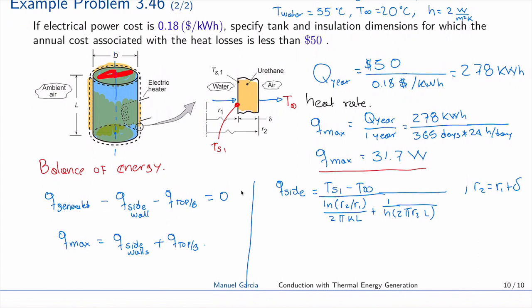Now we add Q of the top and bottom. Those are actually plane walls because they are flat surfaces. Q of the top equals the same difference of temperature, T_S1 minus T_infinity. The first resistance is the resistance of a wall because it's flat, and the thickness of the wall is delta.